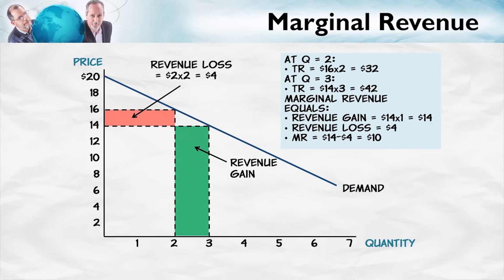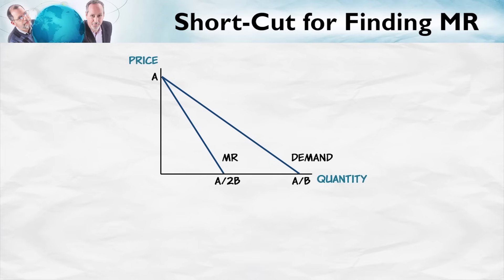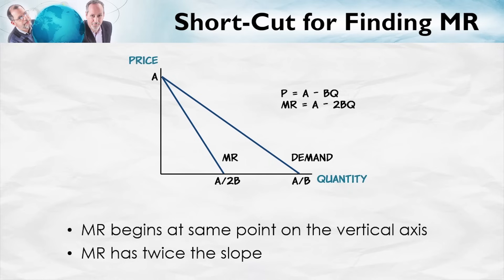We want to find the profit-maximizing price where marginal revenue equals marginal cost. There's a shortcut for finding marginal revenue that works for any linear demand curve. Take a linear demand curve: the marginal revenue curve begins at the same point on the vertical axis as the demand curve and has twice the slope. So if the demand curve is P = A − BQ, then the marginal revenue curve is MR = A − 2BQ.